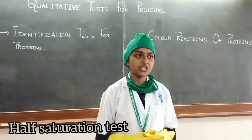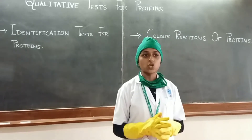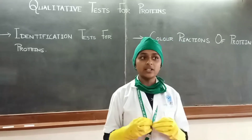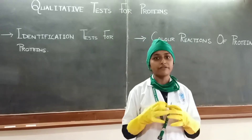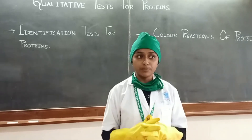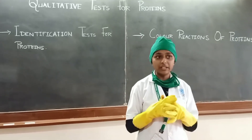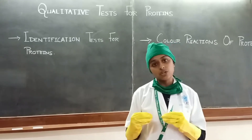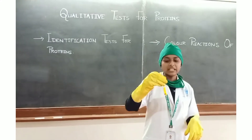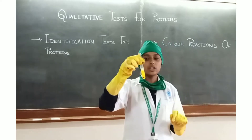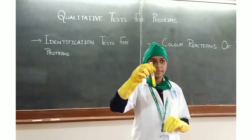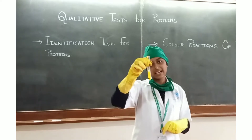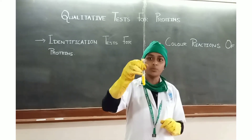Half saturation test: 2 ml of sample plus solid ammonium sulfate until the solution is saturated. Allow to stand for 5 minutes and filter. Perform the biuret test for the filtrate using equal volume of NaOH and 2 drops of CuSO4. A heat-dense coagulant is formed in the upper part of the solution, while the lower part contains a contaminant, indicating the presence of albumin.